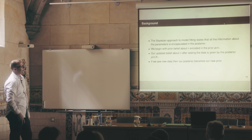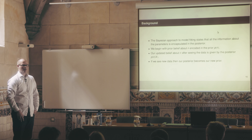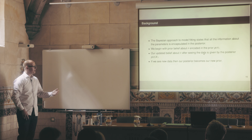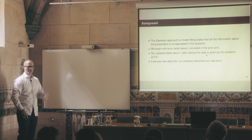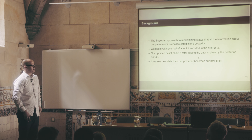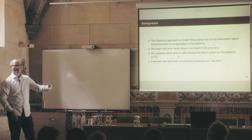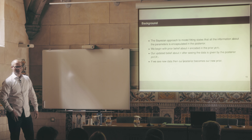The key tenant of Bayesian inference is that everything you need to know is encapsulated in the posterior. Once you've computed the posterior, you have all the information about the parameters the data is going to give you. We begin with prior belief about the parameters — this may be really vague, or we may have more informative priors. Then we update our belief by observing the data and computing the posterior. If we were then to see new data, this posterior becomes our new prior. So there's this sequential thing about constantly updating our beliefs about parameters.